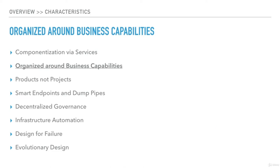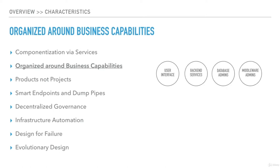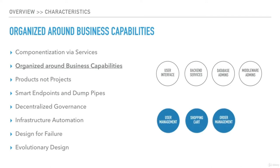The components should be organized around business capabilities. It does not support modularizing the system based on technical functions like UI, backend service, database admins, or middleware teams. Instead, these services should be componentized around business functions like user management, shopping cart, order management, etc.